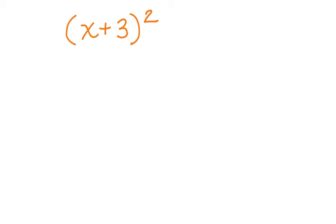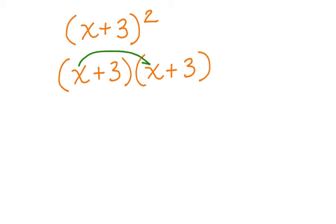Here we have x plus 3 squared. Let's write it out: x plus 3 times x plus 3. Again, we start with the first. x times x is x squared.